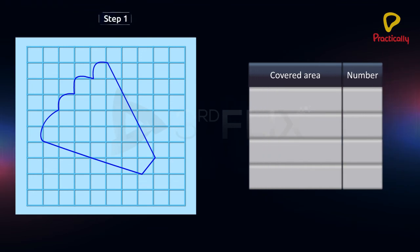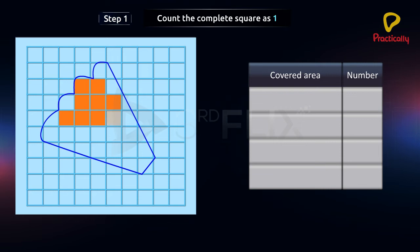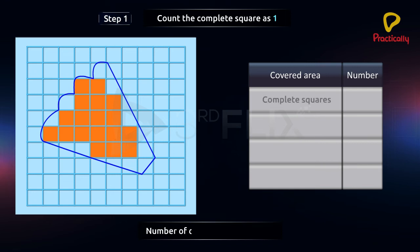Step 1: Count the complete square as 1. Let us color the complete squares in orange. Number of complete squares is equal to 18.